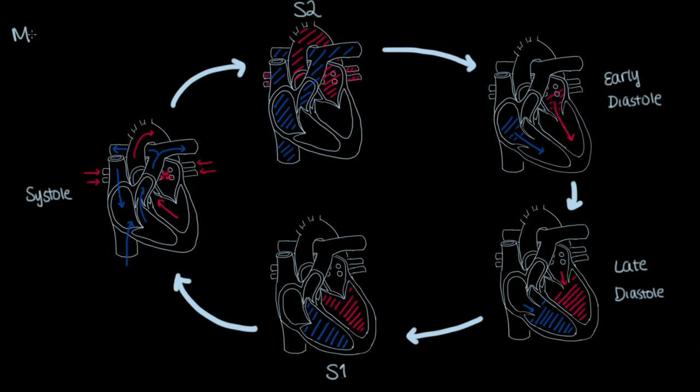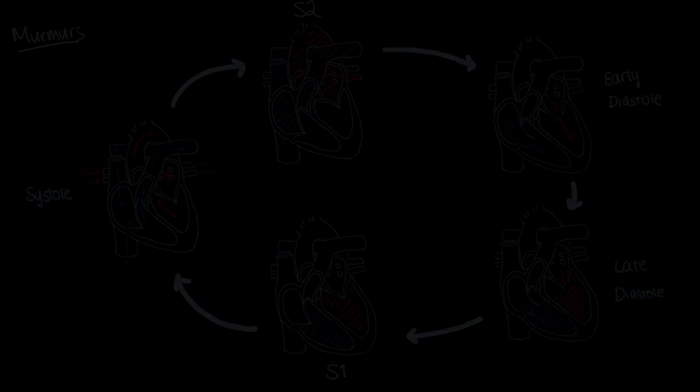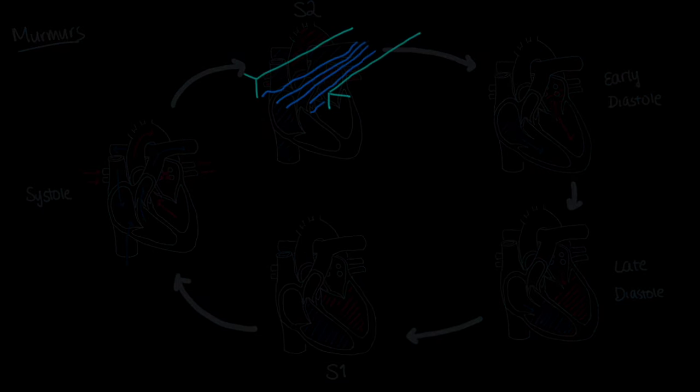The key to understanding murmurs is again to think about where the blood is mainly and where is it trying to flow to. Before, I mentioned that the blood flowing through the valves in the normal heart in normal conditions is much like a quiet, gentle stream.